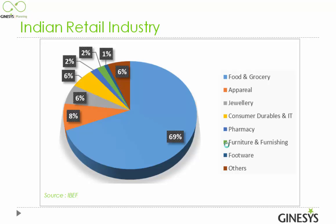This is the overall retail industry breakup with respect to revenue, and we can identify ourselves in this category segment. The maximum share is held by the food and grocery segment, followed by the apparel segment, and accordingly the other segments of this industry are available here.